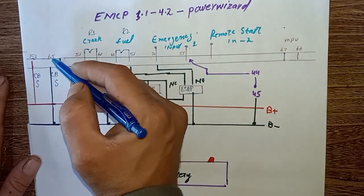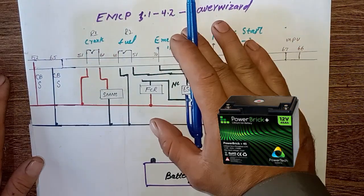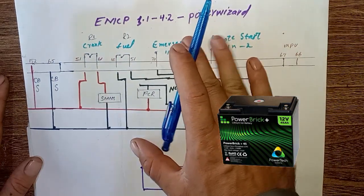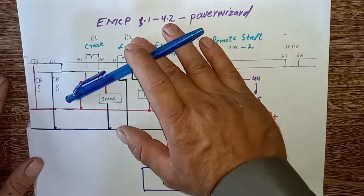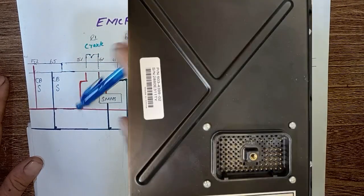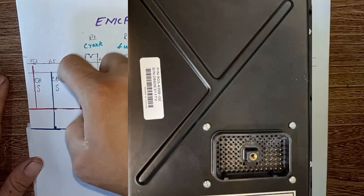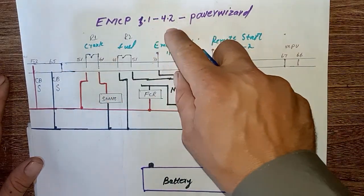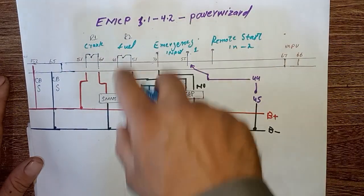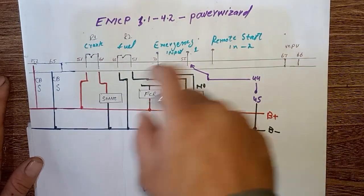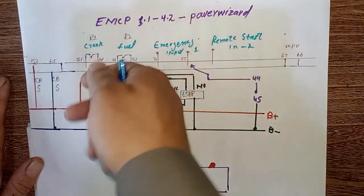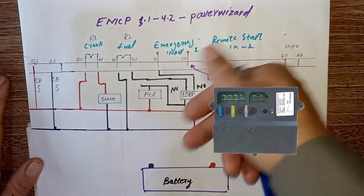This controller panel has on the back side a 70-pin connector. This connector goes to the generator complete alternator system, charging system, start and stop, and also EIM module control.